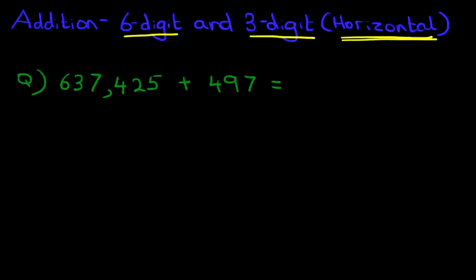Okay, the number 497 doesn't have any thousands. So therefore, the 637 on the left hand side of the comma, we can write that down straight away. 637,000.